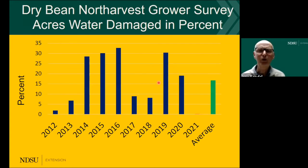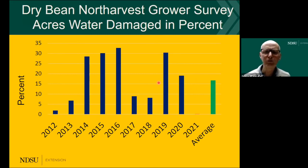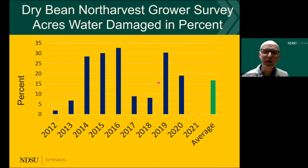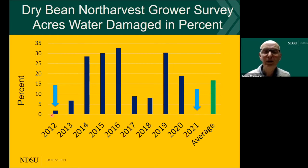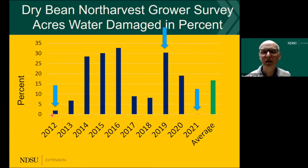One of the factors I want to discuss is the year effect. In the North Harvest grower survey we asked what is your most limiting factor, and one factor is water damage — specifically the percent of fields that had water damage. Looking from 2012 to last year, in 2012 it was a dry year and in 2021 nobody reported water excess because of drought. But we also had some wet years, so I'm going to focus on 2019 as an example.